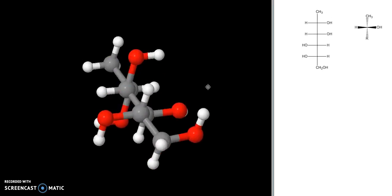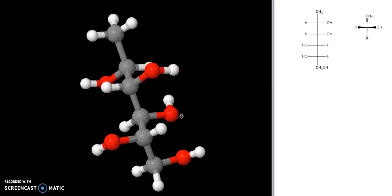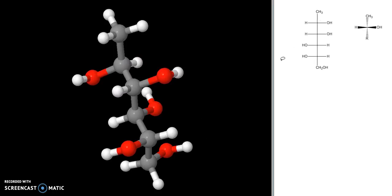More importantly for us, though, is how do we convert this 3D structure, which we got from our Fischer projection, into a more traditional line-angle form. And there are really two different ways that you can do that.